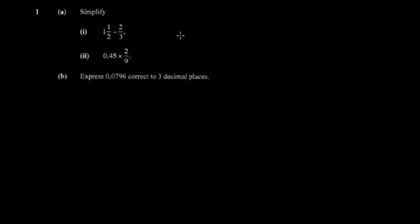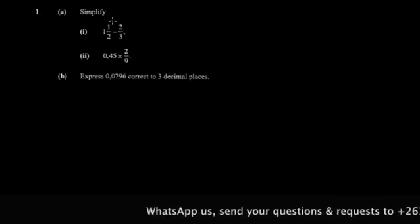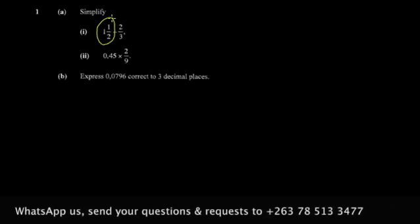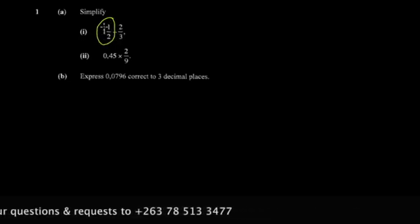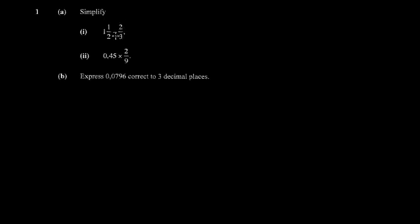Today we're going to do the November 2014 Paper 1. The first question says simplify — you have one and a half, which we call a mixed fraction, meaning you have a whole number with a fraction alongside it. So you have one and a half here, and then two-thirds, and you're supposed to subtract.